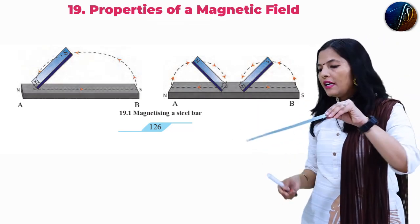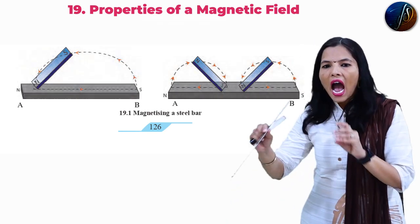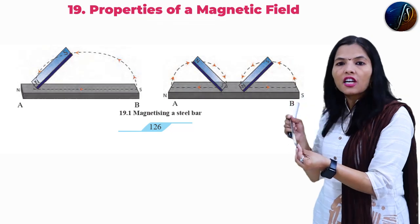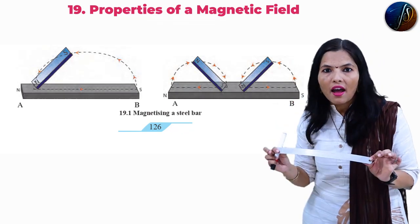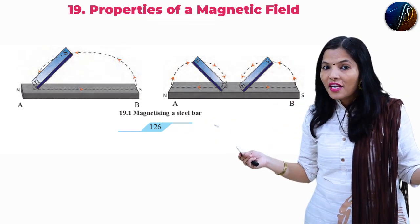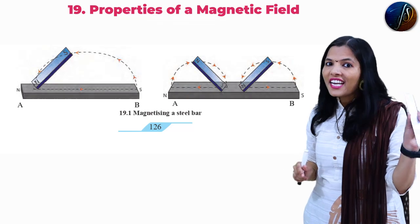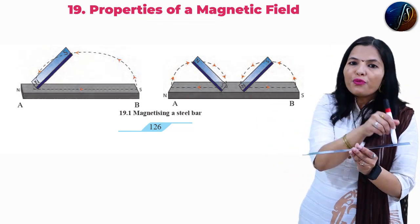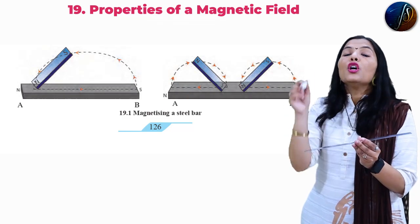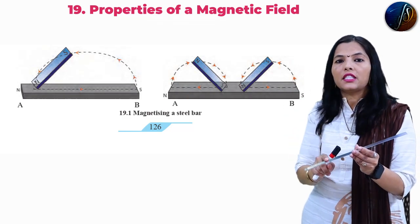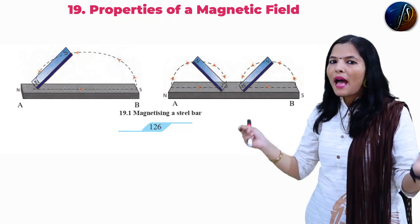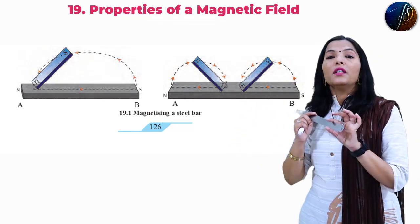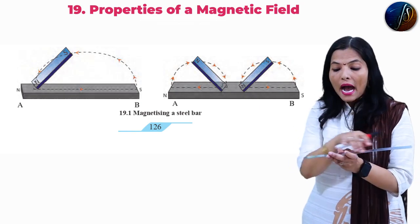Now take this magnetized scale and move it near the iron filings — and see the magic! The iron filings get stuck to the steel bar. This steel is not a magnetic substance, but when we drag the bar magnet 12 to 15 times, magnetism is produced in the steel, and that's why the iron filings get attracted to this steel bar.